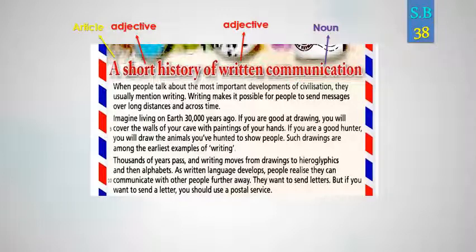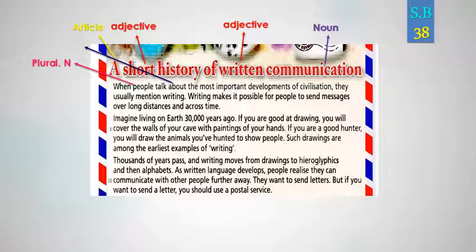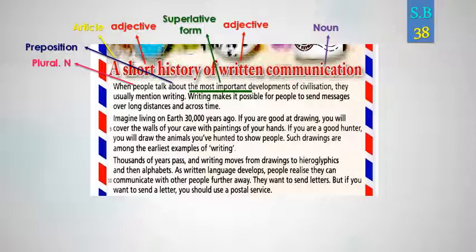When people talk about the most important developments of civilization — عندما يتحدث الناس عن أهم تطورات الحضارة — they usually mention writing. 'People' is a plural noun, 'about' is a preposition — حرف جر. 'The most important' is the superlative form — شكل التفضيل. 'Civilization' is a noun meaning الحضارة.